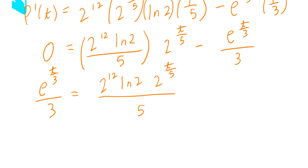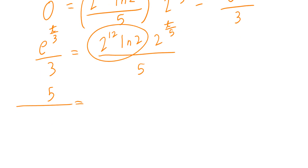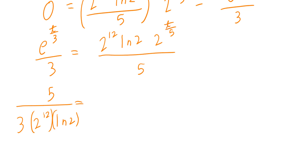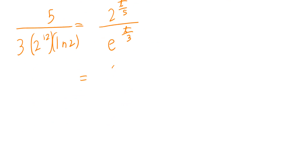I need to isolate for t. Multiplying both sides by 5 and dividing by 2 to the power of 12 times ln of 2 gives: 5 divided by the quantity 3 times 2 to the power of 12 times ln of 2, equals 2 to the power of t divided by 5 over e to the power of t divided by 3. Express the right-hand side in exponent form: 2 to the power of 1 over 5 divided by e to the power of 1 over 3, all in brackets to the power of t. Take ln of both sides to bring the exponent t to the front.